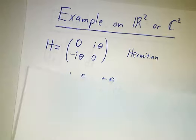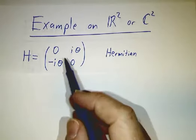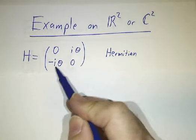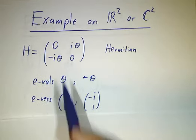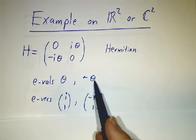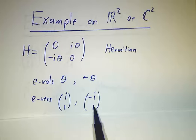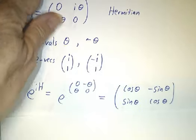So here's an example with 2x2 matrices. This matrix is Hermitian. If you take its transpose, you get minus what you started, and then you conjugate it and you pick up another minus sign. The eigenvalues of this matrix are real. They're θ and minus θ. The eigenvectors are i1 and minus i1, and those are orthogonal.